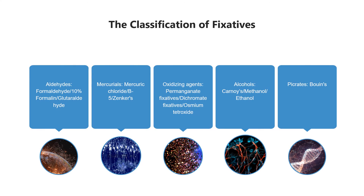There are 5 major groups of fixatives, classified according to mechanism of action. One: Aldehydes — tissue is fixed by cross-linking formed in the proteins, particularly between lysine residues. This cross-linking does not cause much damage to the structure of the protein, so antigenicity is not lost. Formaldehyde is friendly to immunohistochemistry. Formalin penetrates tissue well but is relatively slow. Glutaraldehyde causes deformation of alpha-helix structure in protein, which is not conducive to immunohistochemical staining. However, it fixes very quickly, so is good for electron microscopy, and gives the best overall detail of the cytoplasm and nucleus.